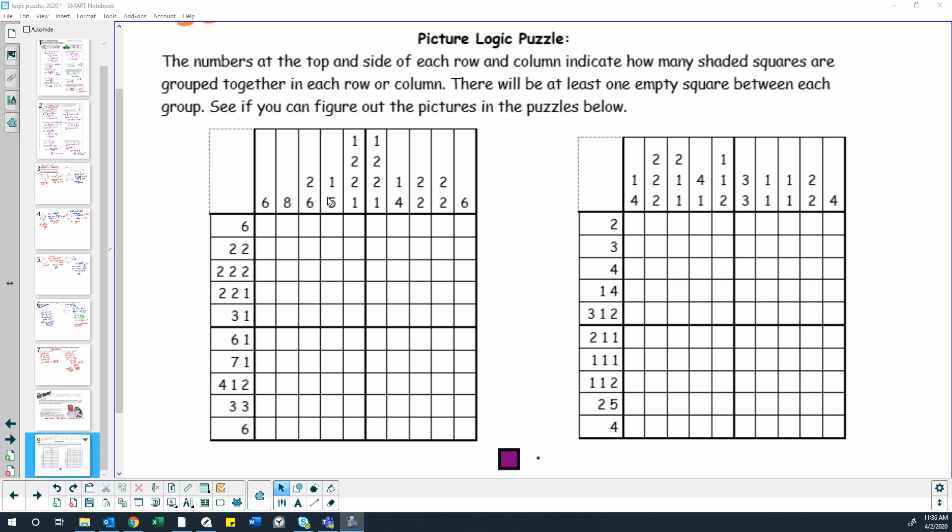So if there's two numbers, then there's at least one empty space between those number of blocks of color. It might make more sense if I just start working on it. It's easiest to start with biggest numbers first because it's easier to figure out where to fill them in.